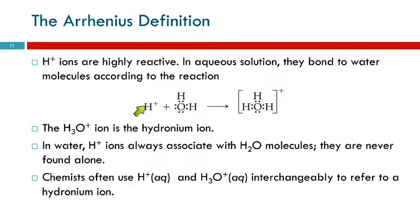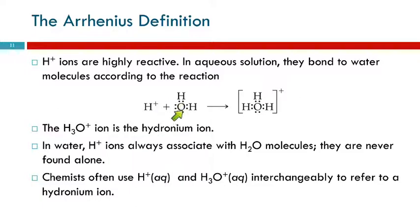The hydrogen ion doesn't have a duet of electrons — it has none. A water molecule has two lone pairs of electrons, and the hydrogen ion comes over and asks to share that pair. The water molecule agrees, so the hydrogen ion bonds to a water molecule. This forms H₃O⁺, called the hydronium ion.